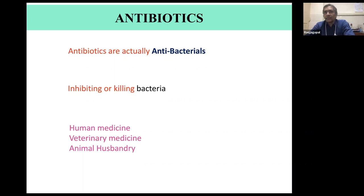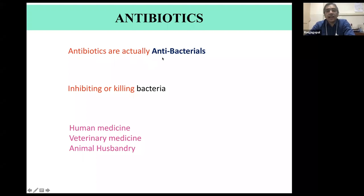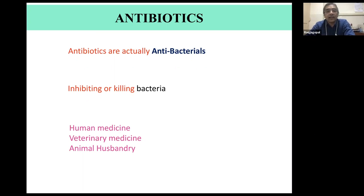Most pathogenic diseases, especially infectious diseases, are caused by bacteria — tuberculosis, E. coli, Shigella, Campylobacter, Staphylococcus — these are major causes of human infections. Antibiotics are products that either kill the bacteria (bactericidal) or inhibit their growth (bacteriostatic).